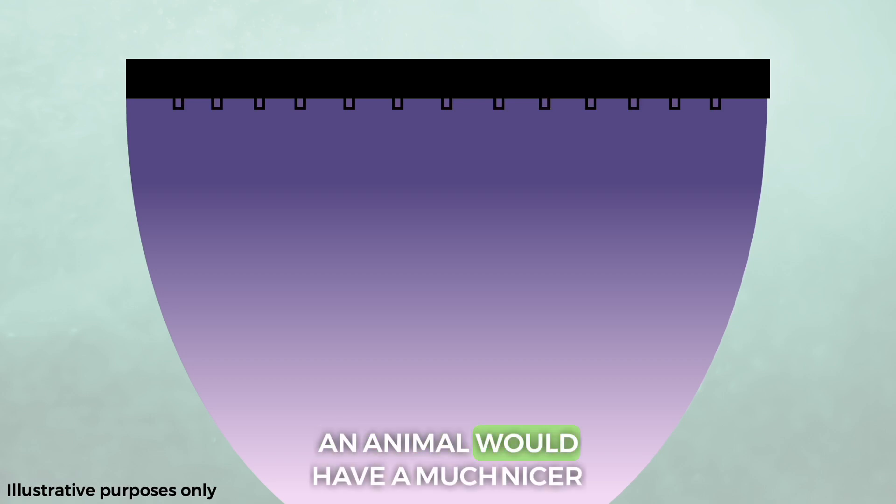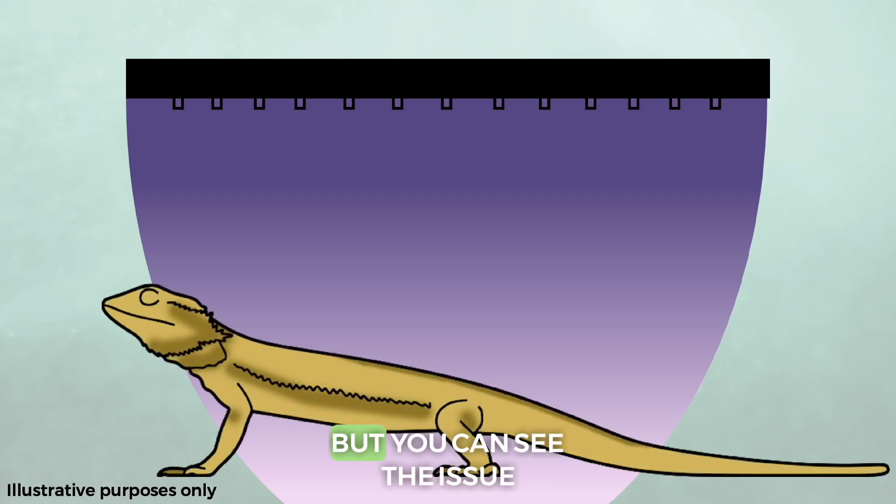Under this lamp, an animal would have a much nicer, wider exposure to UVB. But you can see the issue. More diodes means more heat, and as we discussed last time, this poses a higher risk of component failure.